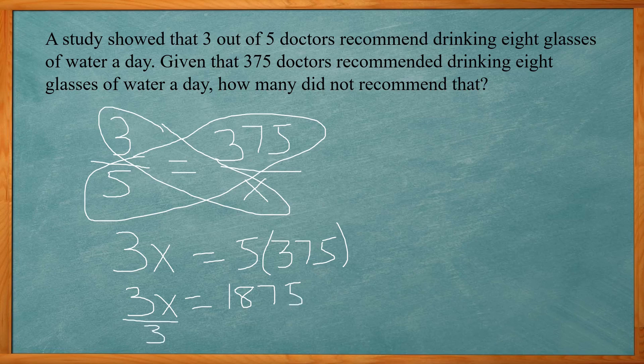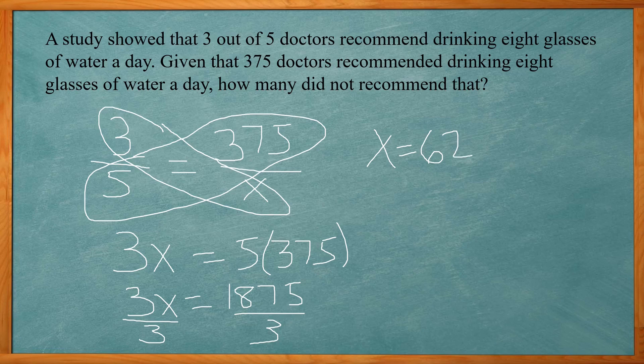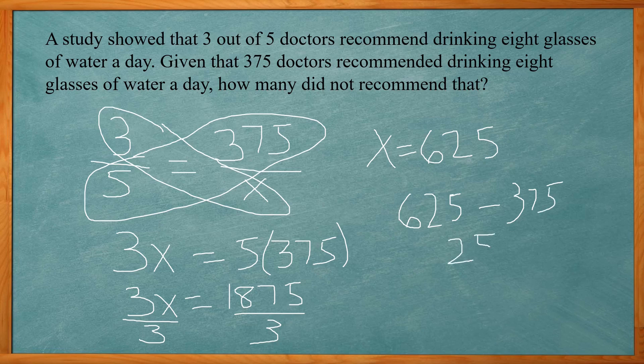Then divide both sides by 3 and then we get x equals 625. Now that's our bottom of our fraction which is going to be the total number of doctors surveyed. So we got to take the 625 minus the 375, and that gives us 250. So there were 250 doctors that did not recommend drinking 8 glasses of water a day.